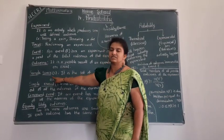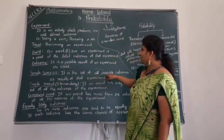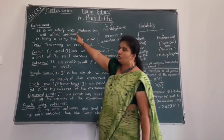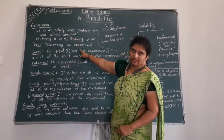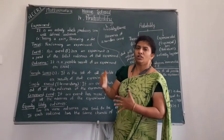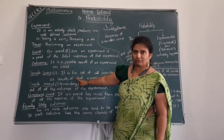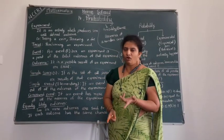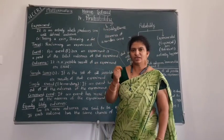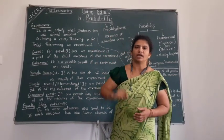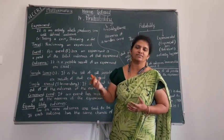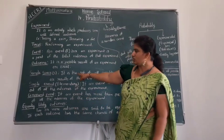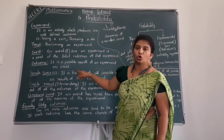Sample space is represented by the letter S. It is the set of all possible outcomes or results of that experiment. When we perform a trial and get many outcomes, all those possible outcomes together are called the sample space. For example, when I toss a coin, the sample space is head or tail. When I throw a die, the outcomes may be 1, 2, 3, 4, 5, 6 — not any other numbers. So the total sample space has six outcomes, and we write N of S equals 6.